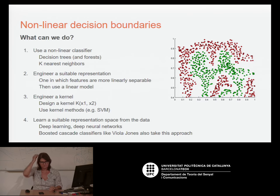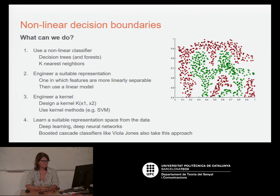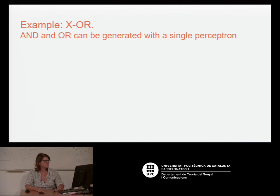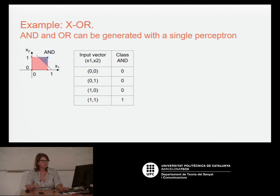There are other classifiers like Viola and Jones — if you know about face detection, this classifier is used to detect faces and also works in another representation of the space. Let's see one simple example that shows why we need to use deep learning to solve a problem. This problem is the classic exclusive OR.